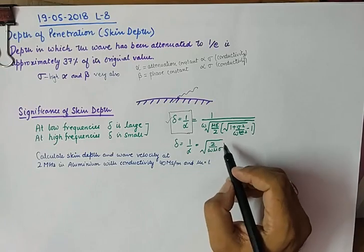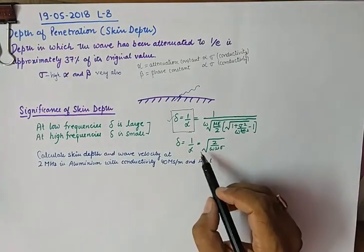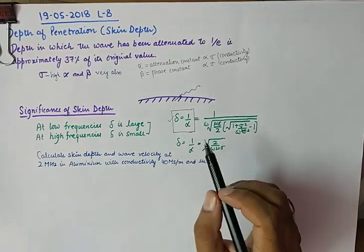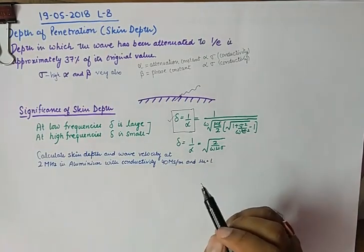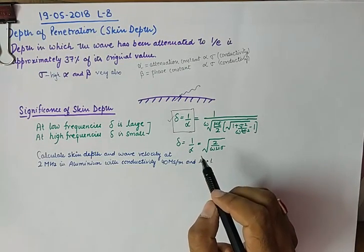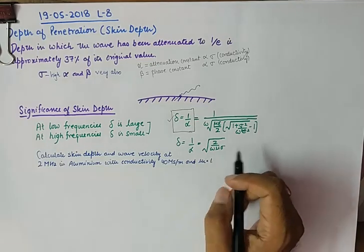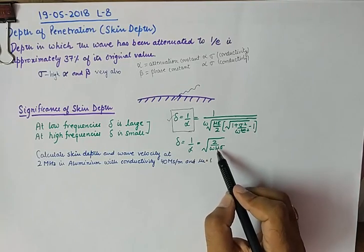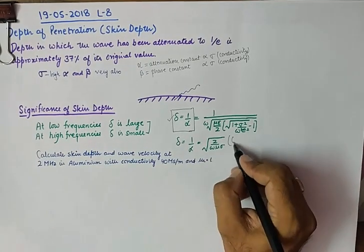So, for good conductors, we know the formula for alpha. If you really wish to know the derivation and formula for alpha and beta for different media like conductor, dielectric, and free space, you should check out my previous video on phase constant and attenuation constant, along with the propagation constant. It will help you a lot. But for the time being, we have taken this formula directly from that discussion. And the reciprocal of alpha becomes the skin depth for good conductors.